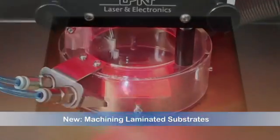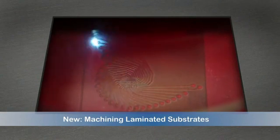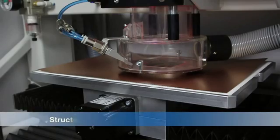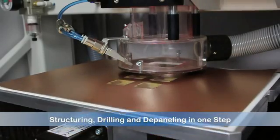The Protolaser U3 employs a patented process to ablate surface material from PCBs. This allows it to etch circuitry, drill holes, and panel in record time, all in one step.